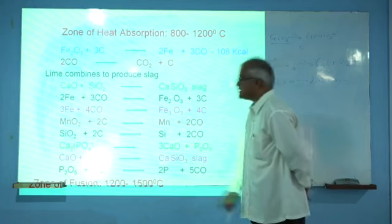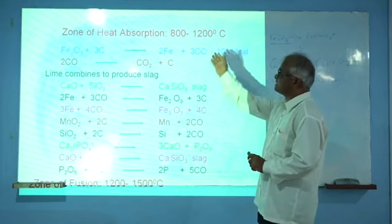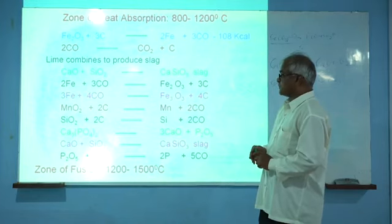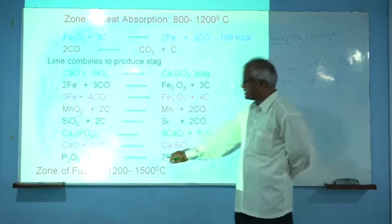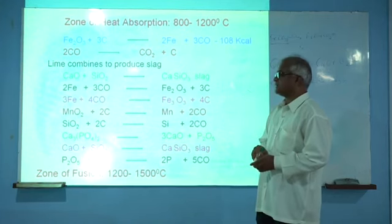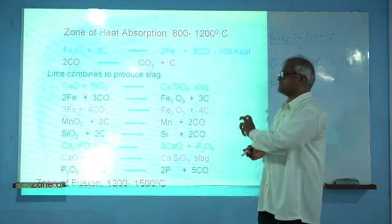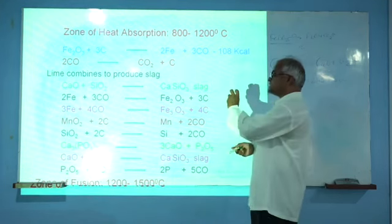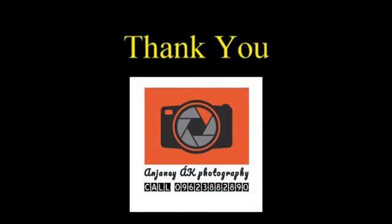The maximum content of phosphorus can be removed at temperature near about 800 to 1200 degrees Celsius. The last zone is the zone of fusion, where the temperature is higher, near about 1200 to 1500 degrees Celsius. In the zone of fusion, temperature should be maintained by different chemical reactions. The function of this blast furnace requires temperature above 1500 degrees Celsius due to this blast — therefore this technique is known as the blast furnace.